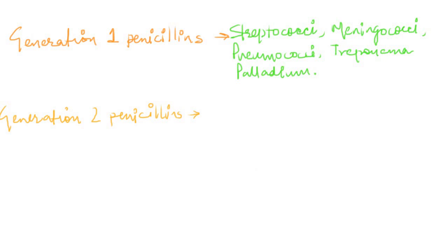Generation 2 penicillins are the very narrow spectrum penicillins, created specifically to act on bacteria that are beta-lactamase producing. Naturally, their spectrum is very narrow — specifically targeting staphylococci bacteria, because staphylococci produce beta-lactamase. So the generation 2 penicillins will act on staphylococci.